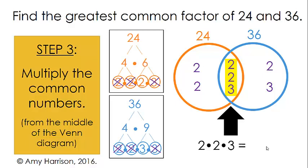2 times 2 is 4, and 4 times 3 is 12. So our greatest common factor is 12.